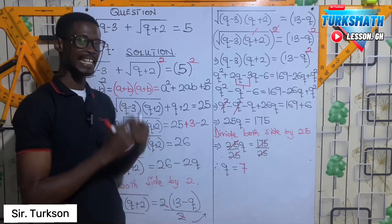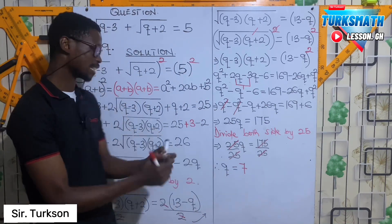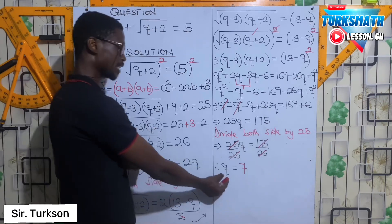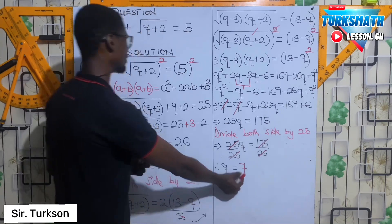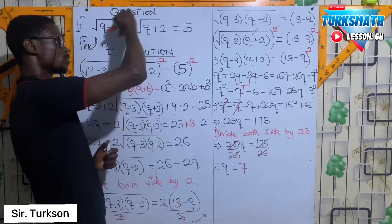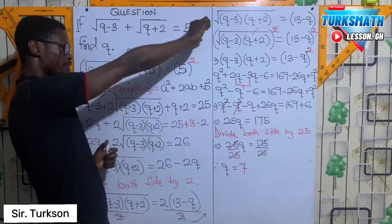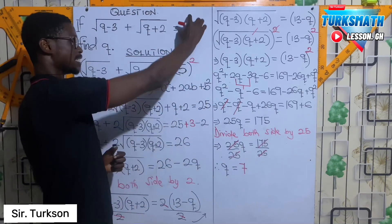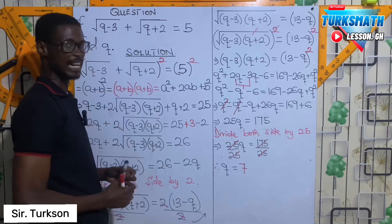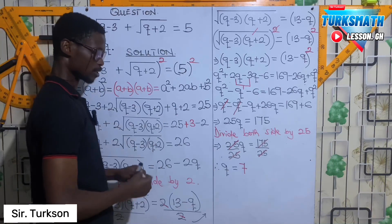I am going to test to see that when I plug in Q equal to 7 into the equation, I will get the result to be 5.